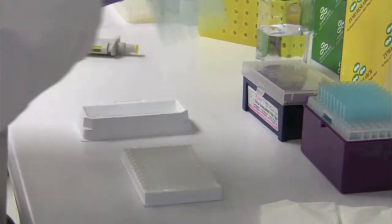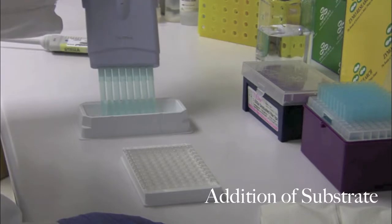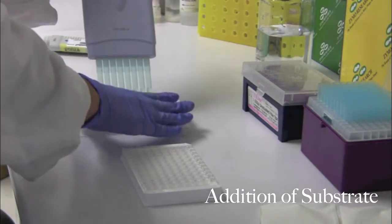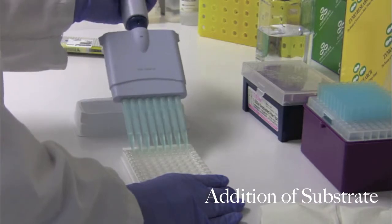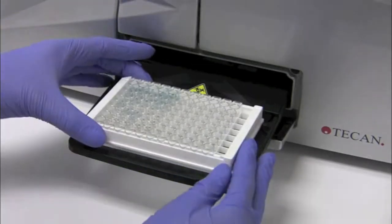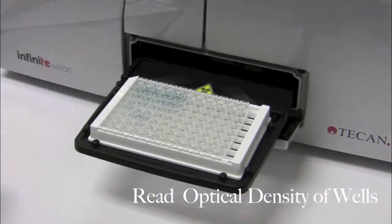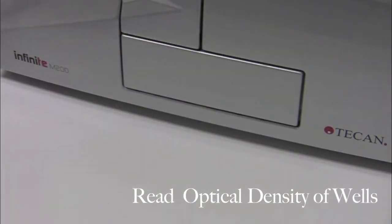Finally, the HRP developer is added. Wells that do not have any bound DNA will not change color and will remain clear. However, wells that contain 5-HMC DNA will appear a greenish-blue color. To obtain results, read the absorbance of each well at 400 to 450 nanometers. This can be done as early as 10 minutes after the addition of the HRP developer.